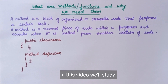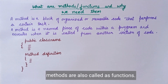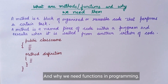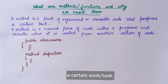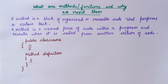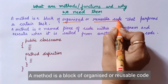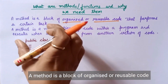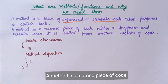In this video, we will learn what methods are in Java. We call them methods, but they are also called functions. What is programming? It is a set of instructions that do some tasks. A method is also a block of organized or reusable code. It is a block that performs a certain task — that is a method and a function in Java.